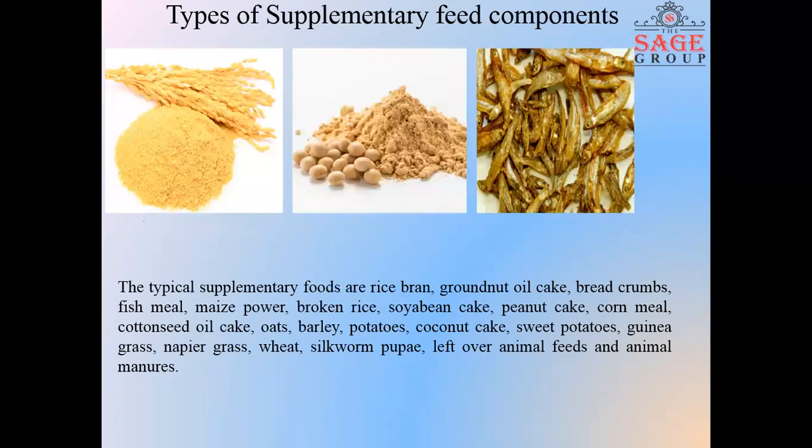Types of supplementary feed components. In profitable fish farming, there is a need for a regular supply of sustained and balanced food. To ensure sustained growth, artificial feed has to be supplemented during times of natural food scarcity. Typical supplementary feeds include rice bran, groundnut oil cake, breadcrumbs, fish meal, maize powder, broken rice, soybean cake, peanut cake, pork meal, cotton seed cake, oats, barley, potatoes, coconut cake, sweet potatoes, guinea grass, napier grass, wheat, silkworm pupa, leftover animal feeds and animal manure.